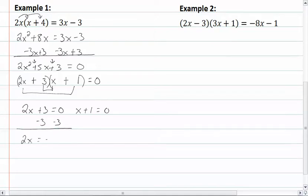So we get 2x equal to negative 3, divide by 2, and x equals negative 3 halves. Solve our other one, and we get x is equal to negative 1.